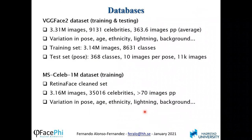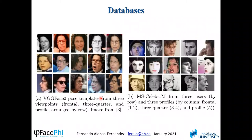For our experiments, we used two databases. VGGFace2 has more than 3 million images and 9,000 classes, with a training set of more than 3 million images and 8,061 classes, plus a test set with pose annotations allowing pose-dependent experiments — 368 classes with 10 images per pose, totaling 11,000 images. For training we also used the MS1M dataset, which contains more than 3 million images of 35,000 different people. Examples from both databases include frontal, three-quarter, and profile images.